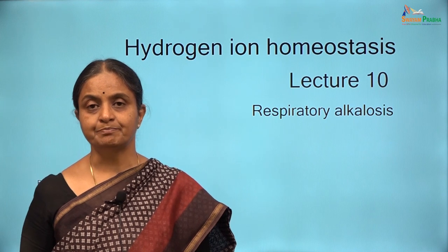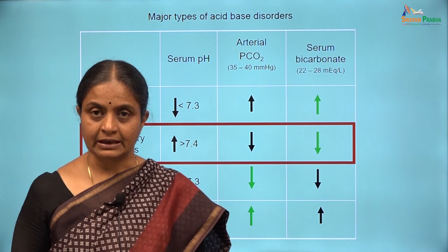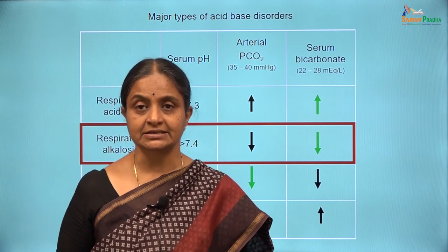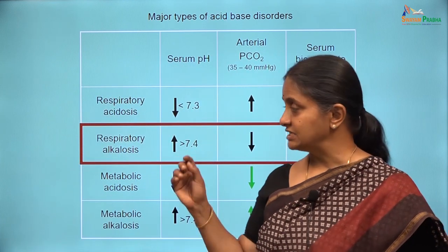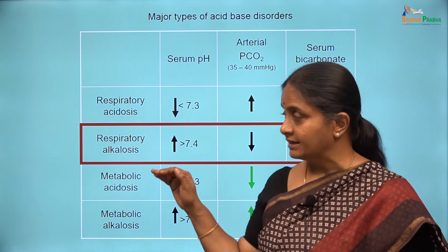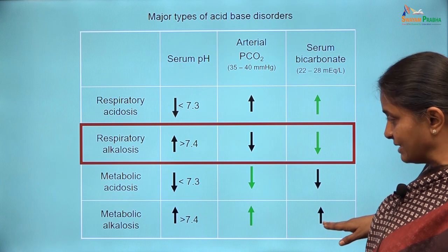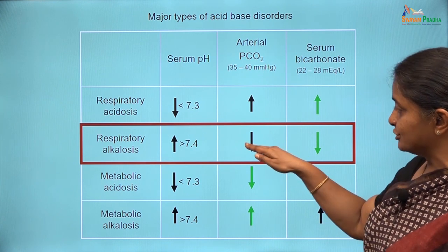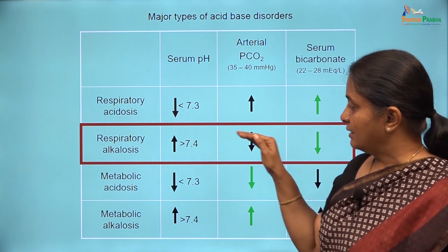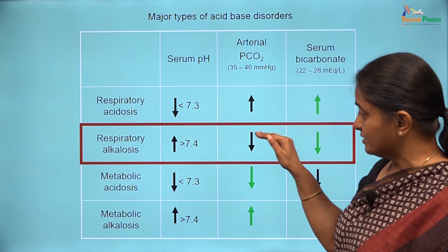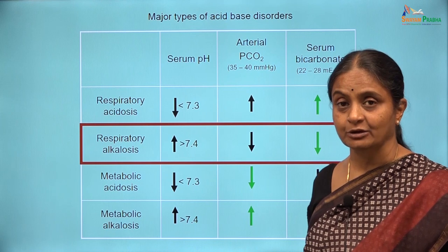We have been discussing simple acid-base disorders. There are four types and in this session we will discuss respiratory alkalosis. Alkalosis is a condition where plasma pH is more than 7.4. It can happen either due to an increase in plasma bicarbonate or due to a reduction in arterial carbon dioxide, and when there is a primary reduction in arterial carbon dioxide, we refer to that as respiratory alkalosis.